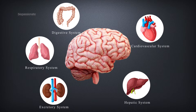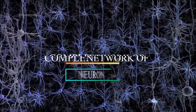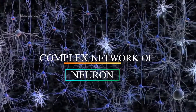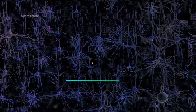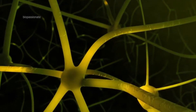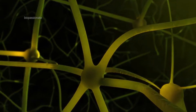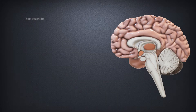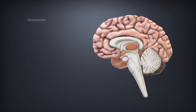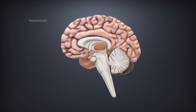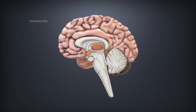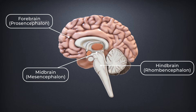The entire brain is composed of a complex network of neurons. Neurons are the structural and functional unit of the nervous system. They carry impulses in the form of electrical signals. The human brain has three major parts: forebrain, midbrain, and hindbrain.